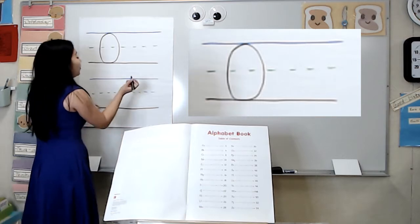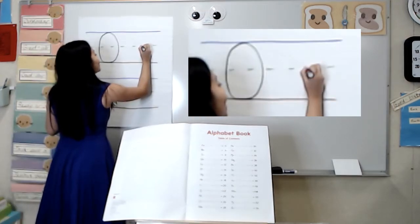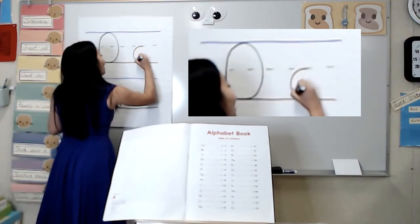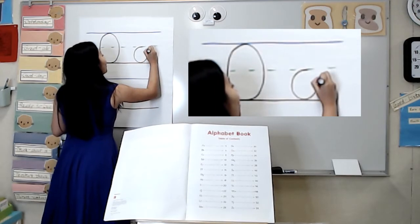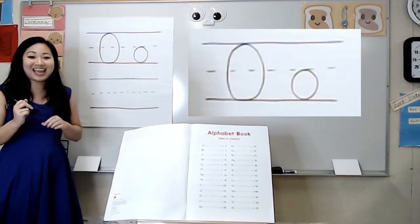For lowercase O, you start in the grass, curve around, and all the way back up. Just like that.